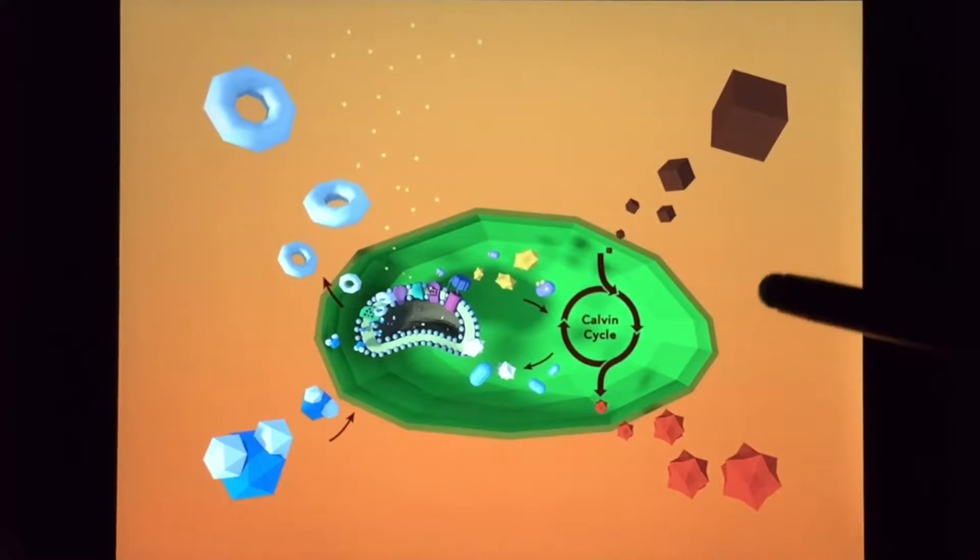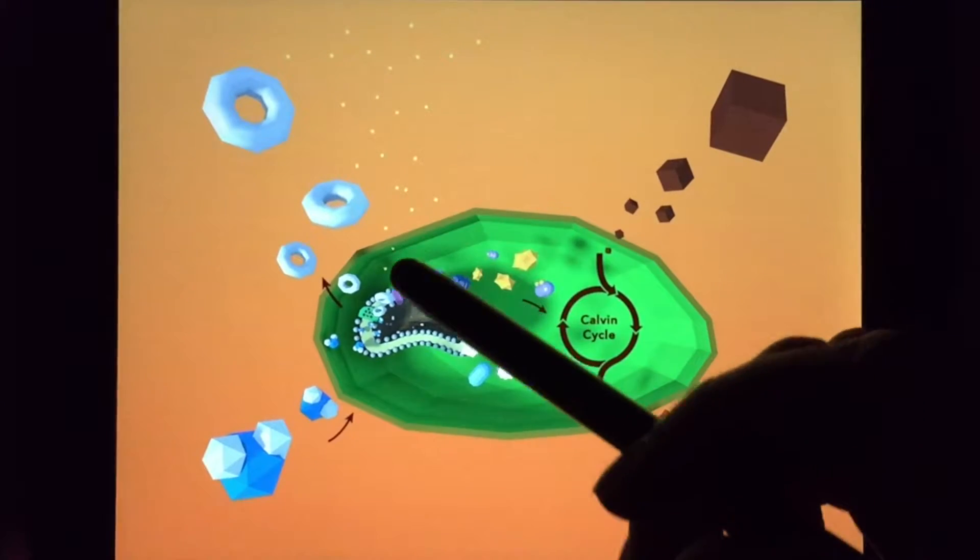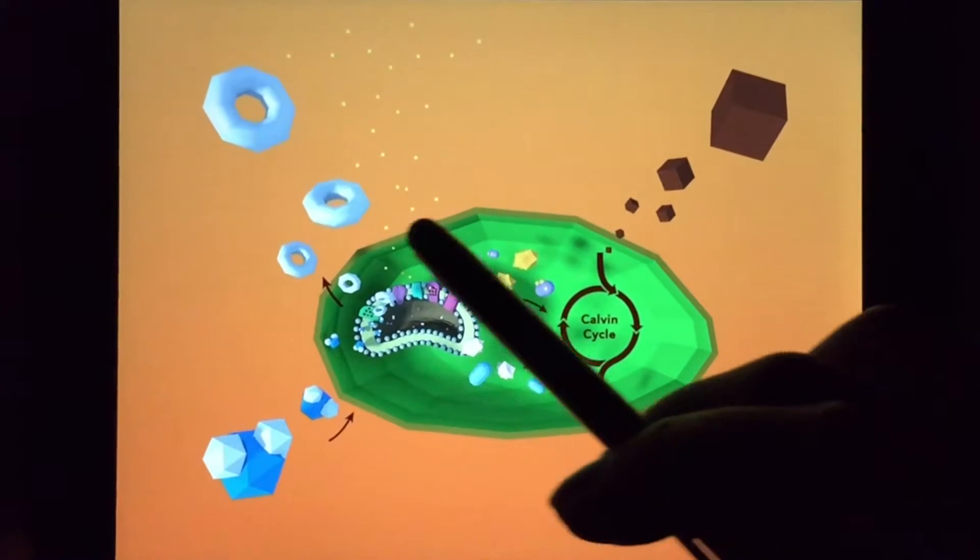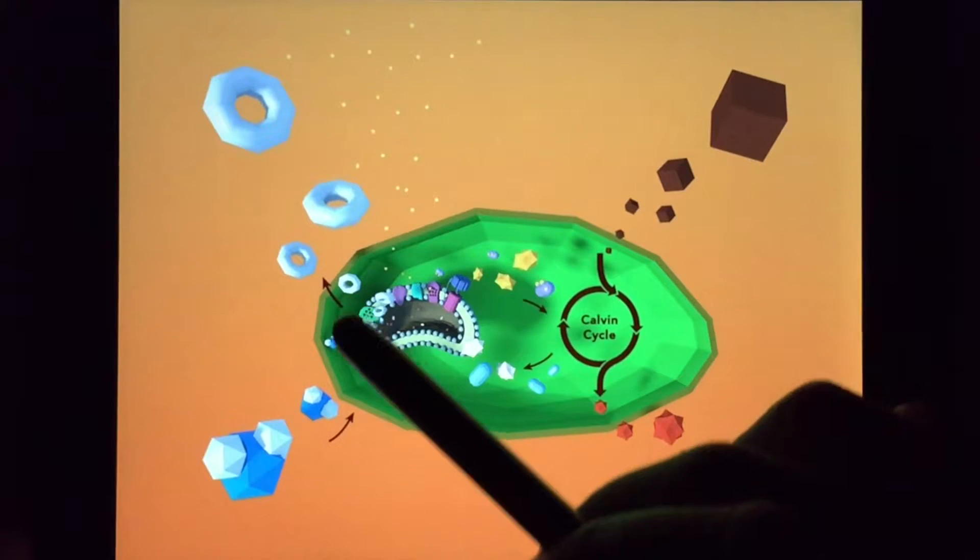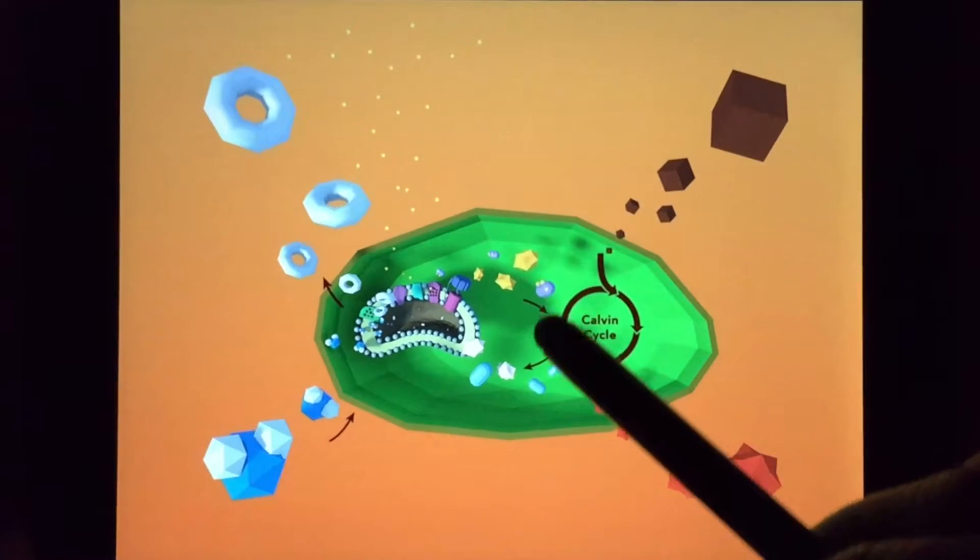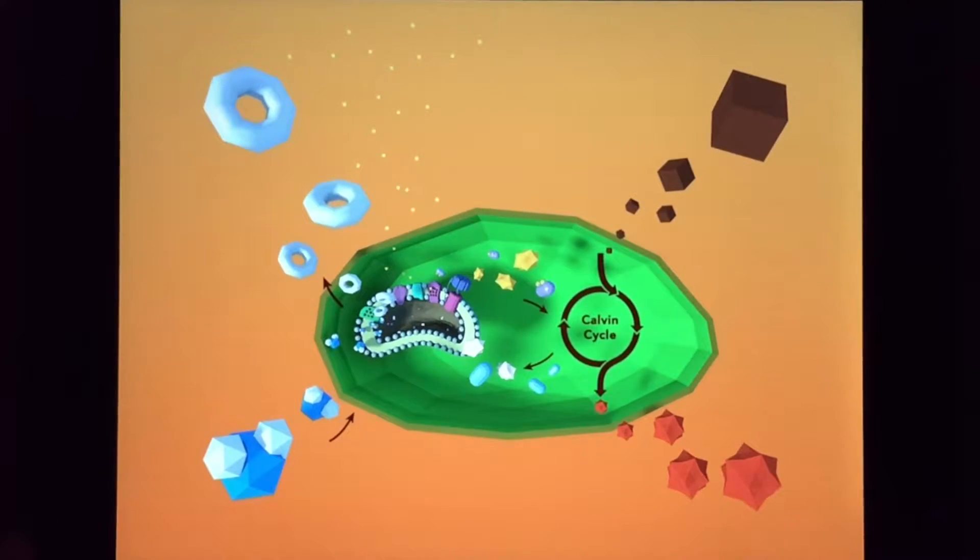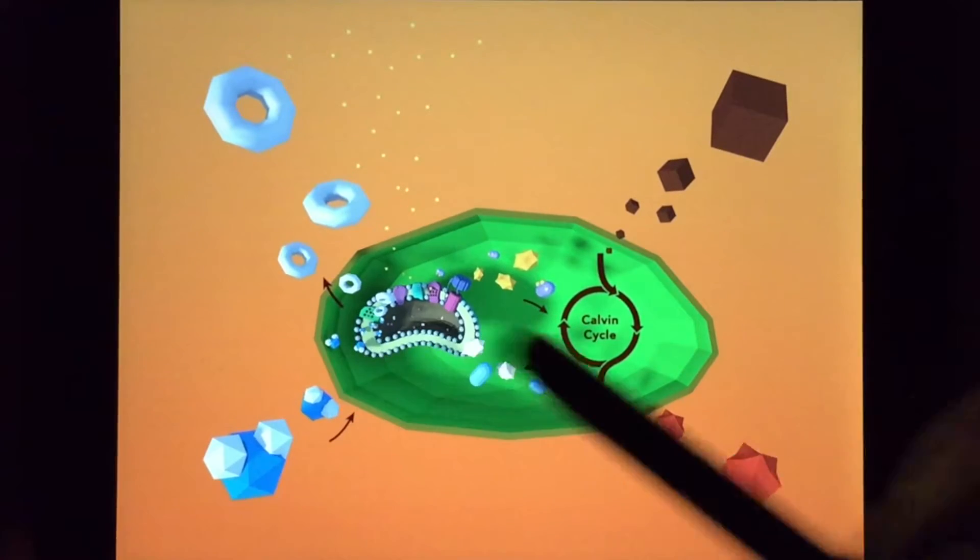Photosynthesis takes place mainly in the leaves of plants and it happens in two stages. These stages are known as light-dependent reactions and light-independent reactions. Let's start with the light-dependent reactions.